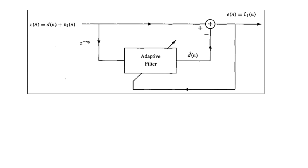This is illustrated in the block schematic using an adaptive filter. In this configuration, the procedure will produce the estimate of the broadband process d(n), and the error signal e(n) will correspond to an estimate of the noise signal v1(n). For this adaptive noise canceller without a reference, x(n) = d(n) + v1(n), where d(n) is a sinusoid with ω₀ = 0.05π and v1(n) is an AR(1) process with g(n) being white noise of variance 0.25.